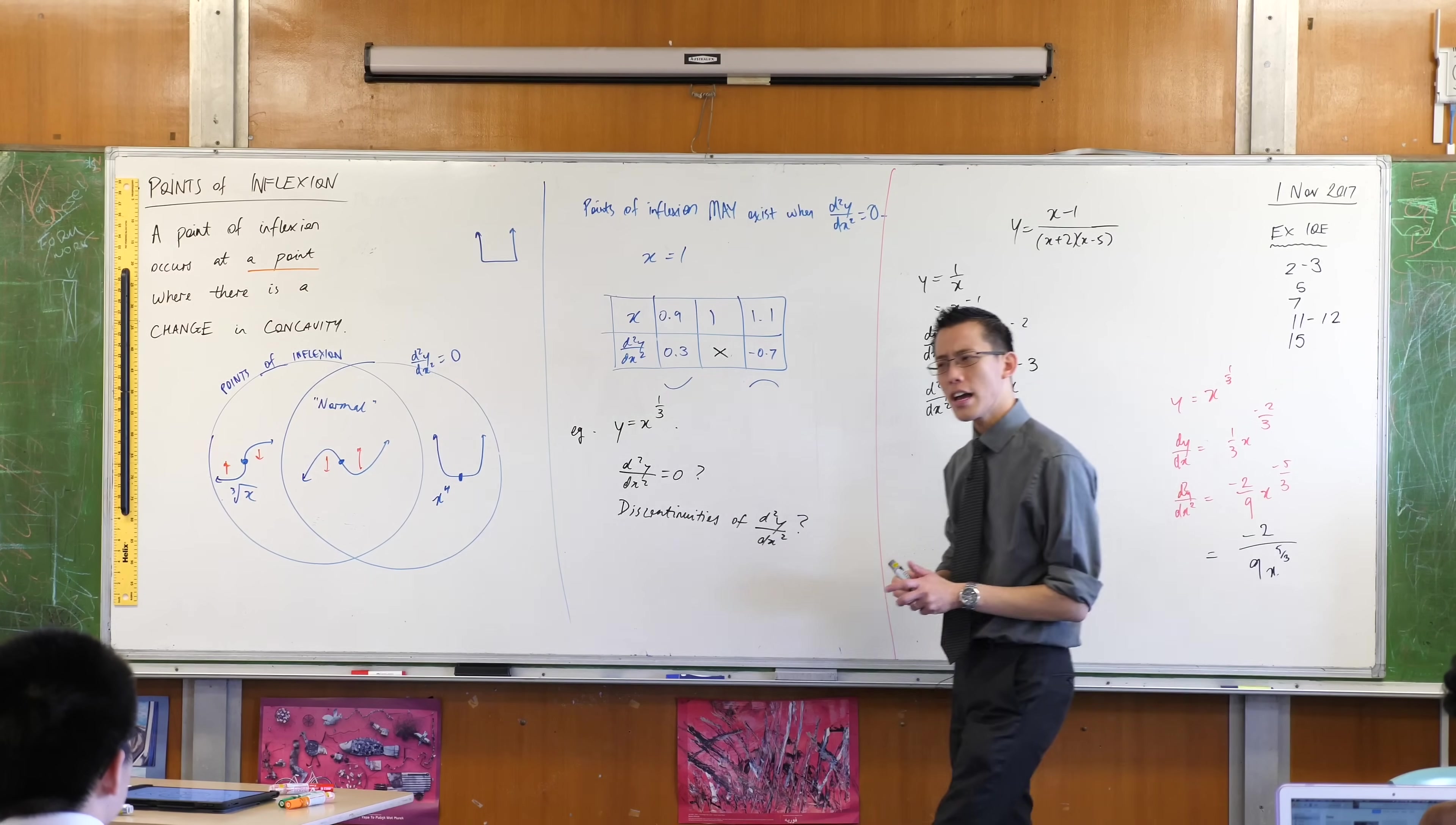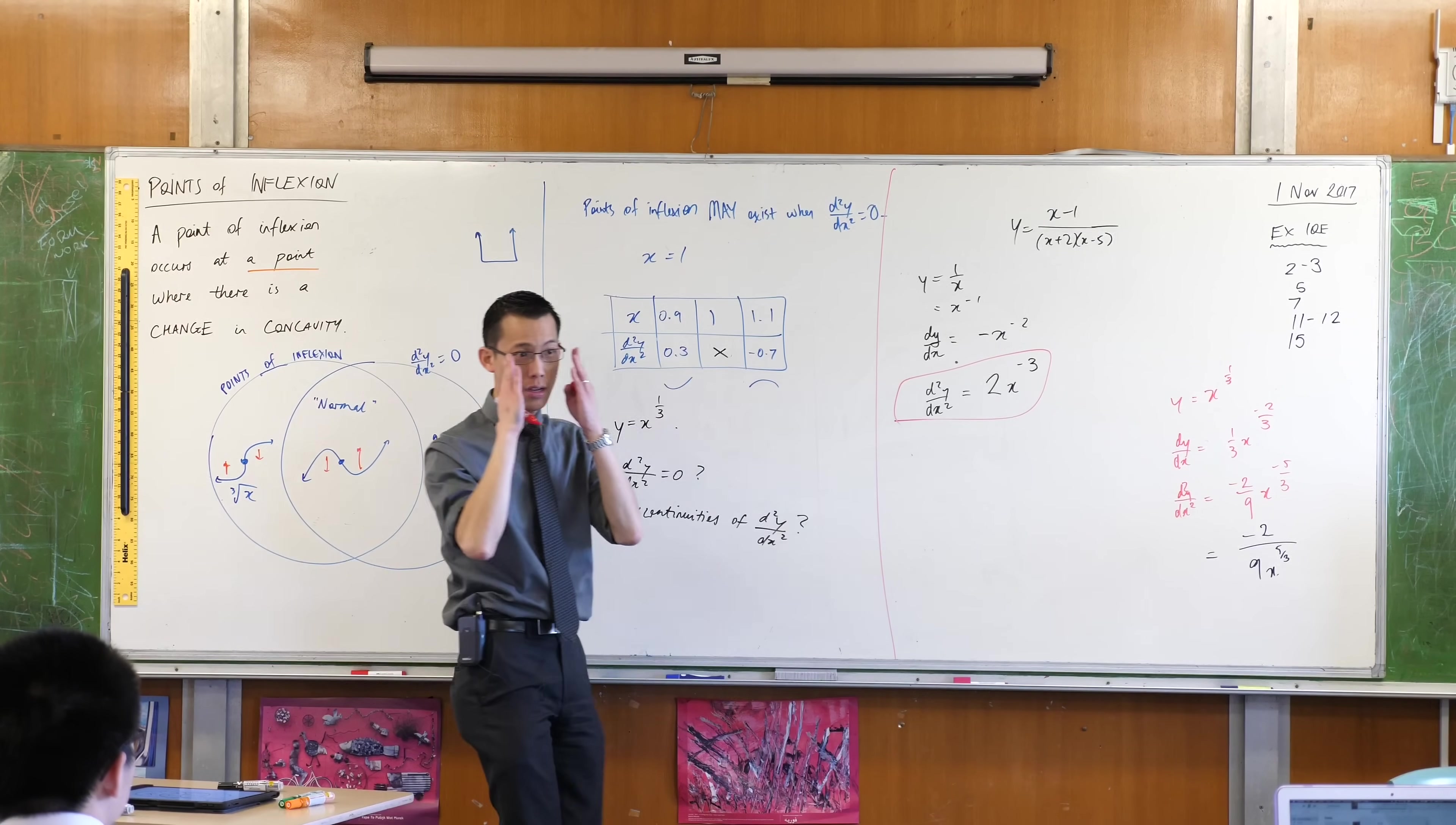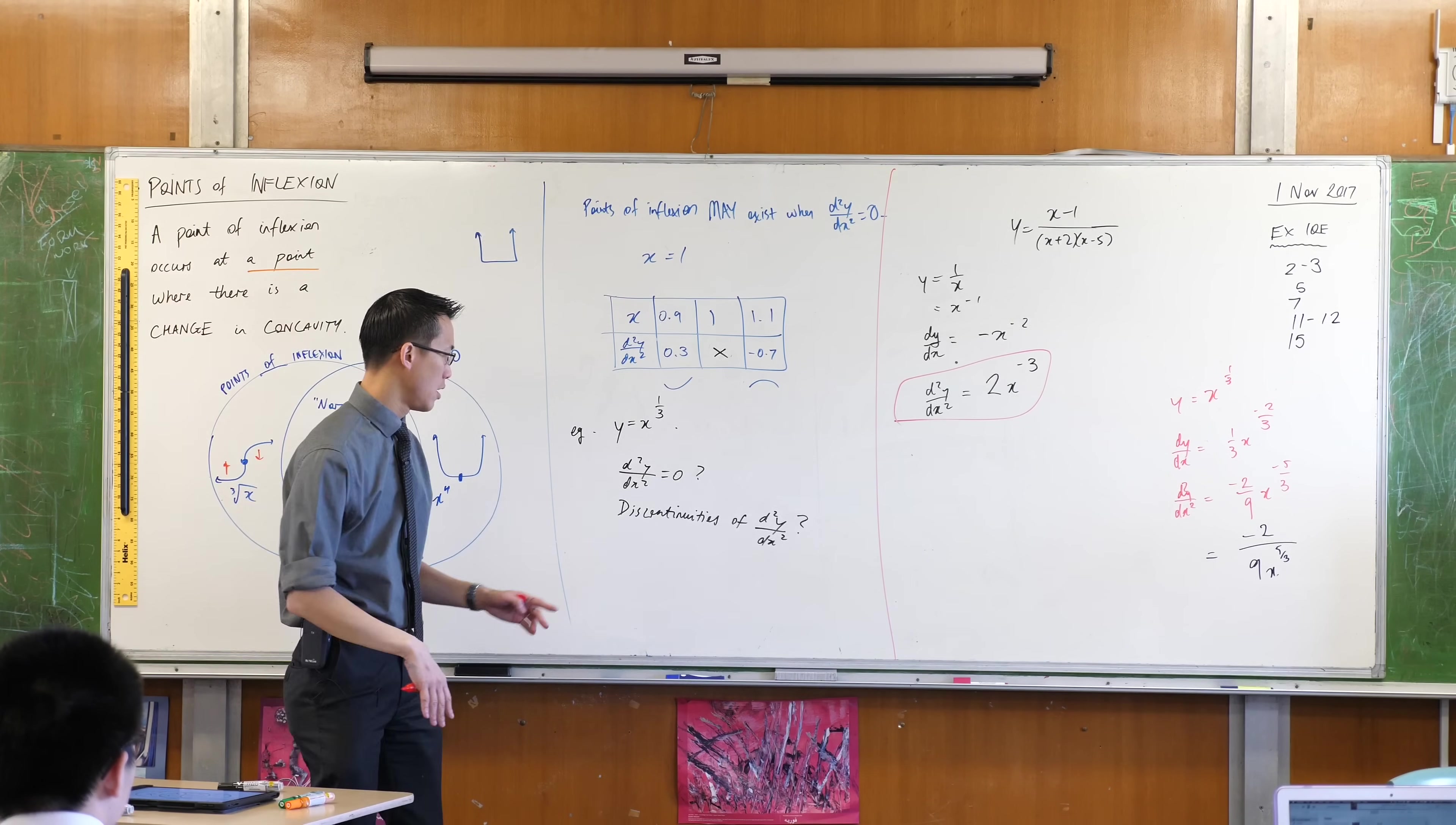Now if I apply the same kind of logic that I did before, I say, is the second derivative, is this guy ever zero? And the answer is no. This is 2 on x cubed. There's no value you can put in there that would make it zero. You can get close to zero, but never zero. So this never happens.